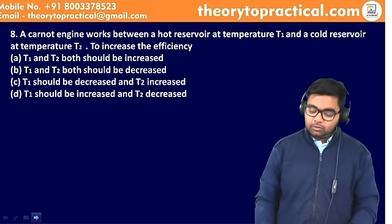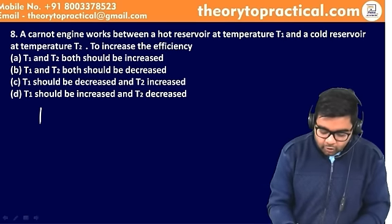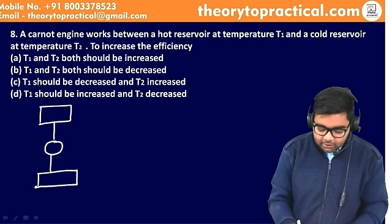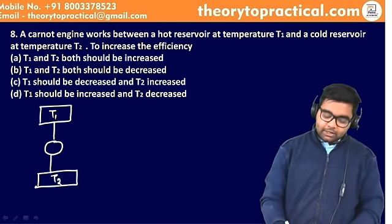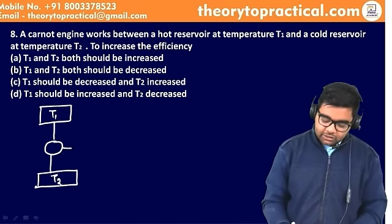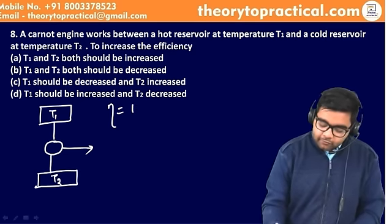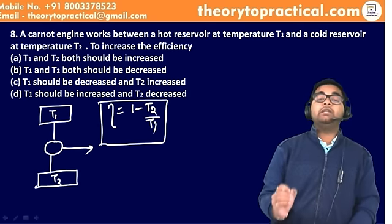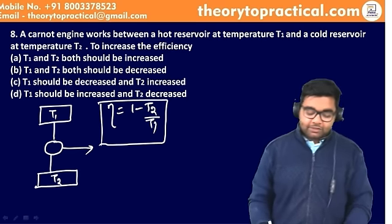अगला question: a Carnot engine works between a hot reservoir temperature T1 और cold temperature T2। अगर efficiency increase करनी है तो हमको पता है कि Carnot cycle की efficiency = 1 − T2/T1, या 1 − T_lower/T_higher। यह lower temperature है और यह higher temperature है। Efficiency कैसे बढ़ेगी?